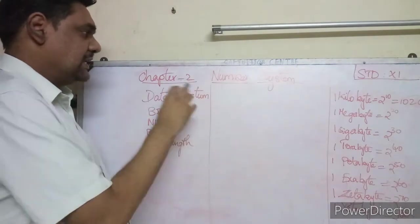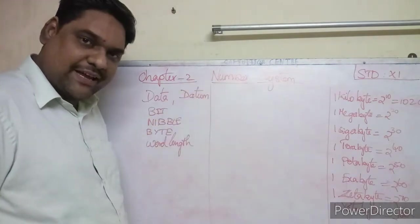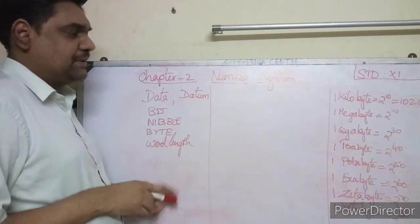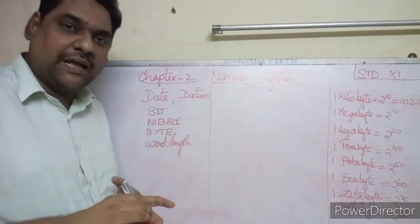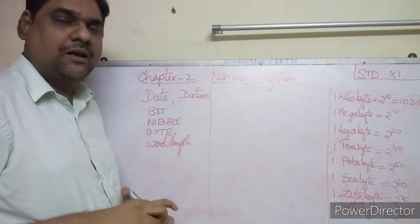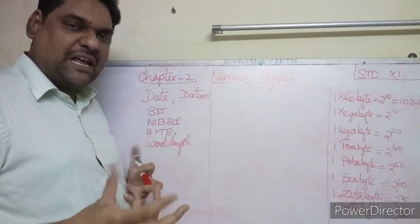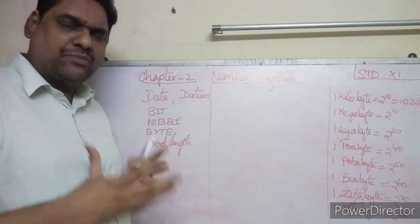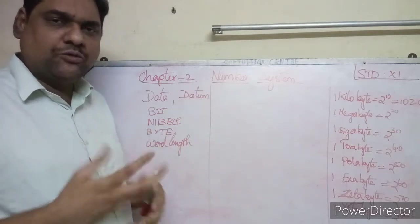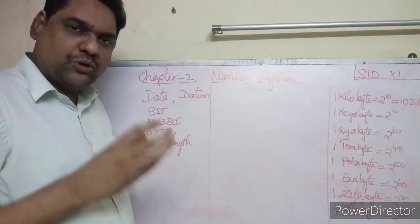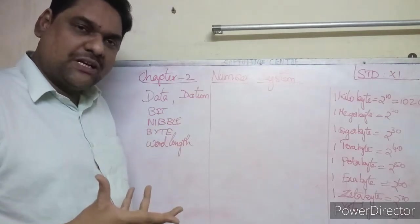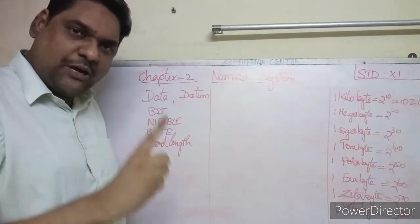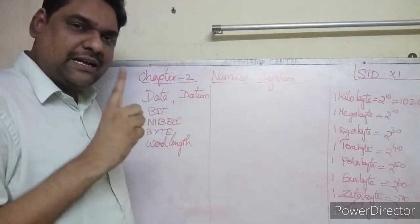Hello children, today let us see the number system, which is the second chapter in your standard 11 textbook. The first chapter discussed datum and data. Data means numbers or values — when a computer processes numbers, those values are called data.